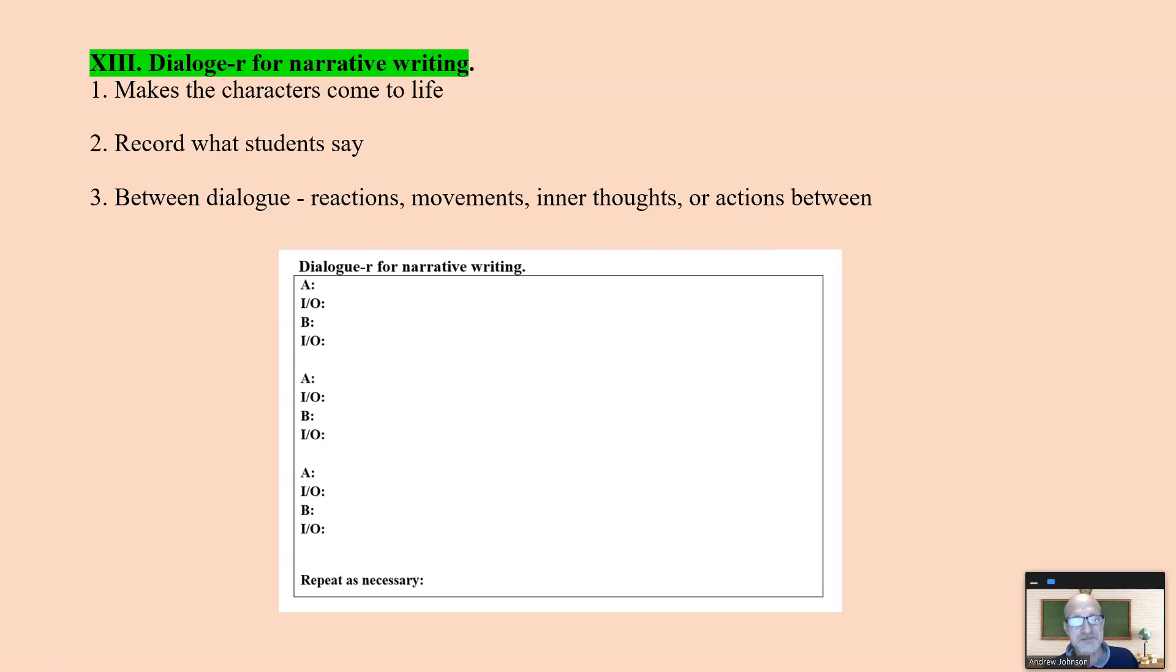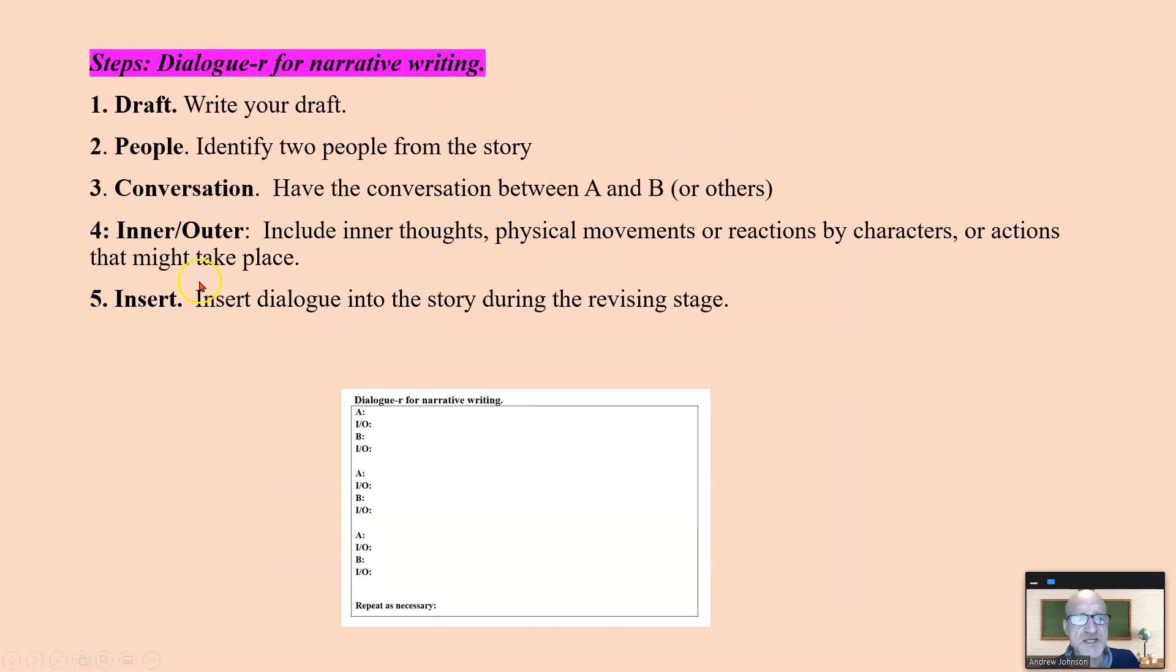Dialoguer makes the characters come to life. You record what students say. And this works good with pairs, because you could have students take, each person take a character. You have what person A says, and you describe then the reactions, the movements, the inner thoughts or outer actions taking place. Hello, he said, he buttons his tie. Hi, you look very good today, turns around. So yes, you have dialogue, but then you record the actions and reactions that characters take with each other. Conversation between A and B include inner thoughts, physical movements, and insert the dialogue. And here's the thing about the dialoguer - however, it creates backstory. You don't have to include all of the dialogue in the story, but it adds depth and dimension to your own understanding of the characters in that scene. Allows you to see them.